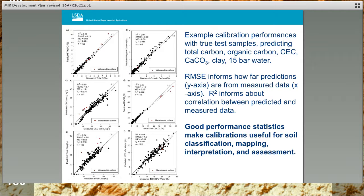In each of these graphs, the Y or vertical axis represents estimated or predicted values of soil properties, including — starting from top left to right — total carbon, organic carbon, cation exchange capacity, calcium carbonate equivalent, total clay, and 15 bar water. The X axis represents the measured values of soil properties. Keep in mind that these graphs represent true test samples, which are not samples that were used to build the MIR calibrations. These very attractive correlations and errors demonstrate the viability of using MIR spectra to estimate soil properties for purposes such as soil classification, survey, soil health assessment, and monitoring. The results of this pilot project have resulted in increasing investment by NRCS in MIR technology.